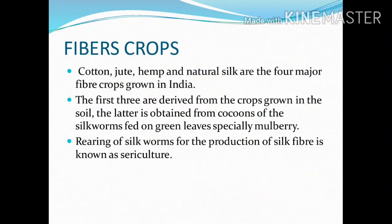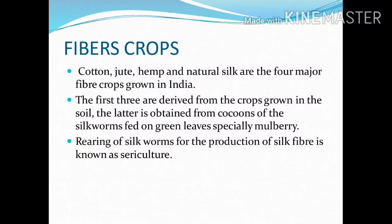Fibrous crops: Cotton, jute, hemp, and natural silk are the four major fiber crops grown in India. The first three are derived from crops grown in the soil, and the latter is obtained from cocoons of the silk worm fed on green leaves, especially mulberry. Rearing of silk worms for the production of silk fiber is known as sericulture.